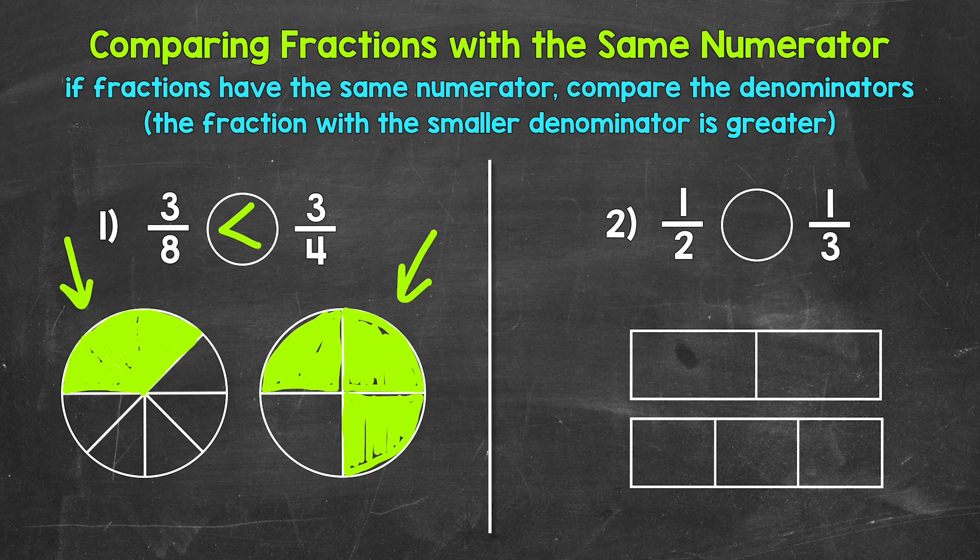Let's move on to number two, where we have one half and one third. Reading this from left to right, we have one half is greater than, less than, or equal to one third. We have the same numerator here — one — so we can just compare the denominators.